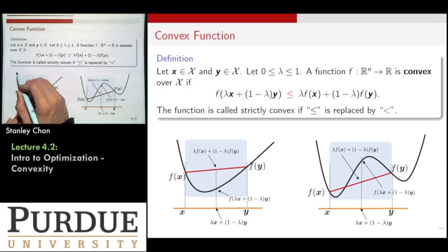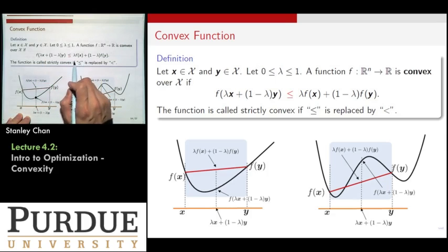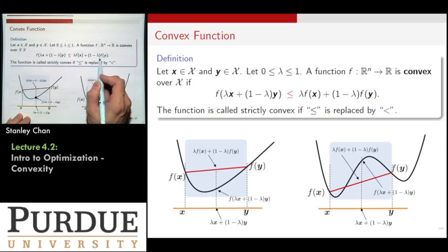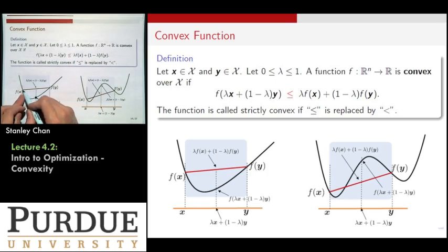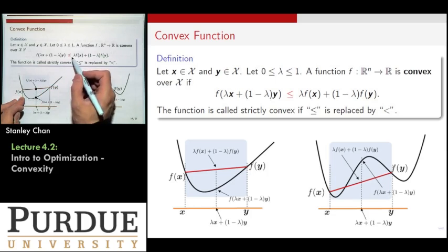Is it good? So you have a function. You look at the point, and then you evaluate the point right here. Now let's look at the right-hand side. The right-hand side says that I have f(x), f(x) is here, and then f(y) is there. You form a linear combination of these two points. That means you're drawing a line. And this inequality says that this red line is always higher than this black curve. If you have that inequality satisfied, yes, you have a convex function.